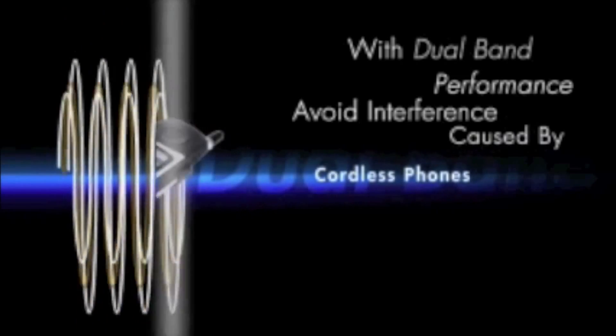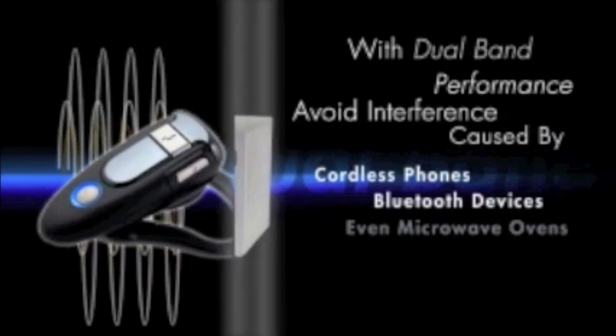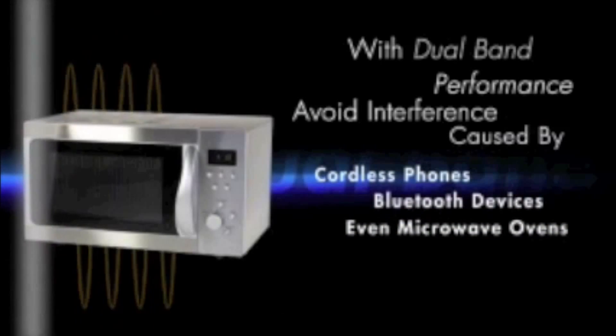The 2.4GHz band is the most pervasive and commonly used wireless band. Now this band is also shared by many other devices in your home you may not think about, like your cordless phones, microwaves, Bluetooth devices, and even baby monitors.